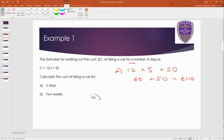Then for part b, it says that they've hired the car for two weeks. So we're not going to substitute n for the number two, because n is the number of days. Two weeks is 14 days. So we're just going to substitute n for the number 14 in this case. So we're going to do 12 times by 14 and then add the 50 on afterwards. Use the box method if you're unsure to do 12 times 14. That should give us 168 there.